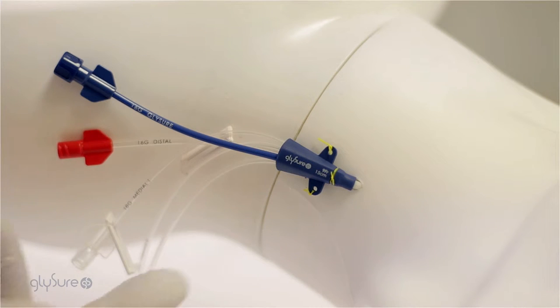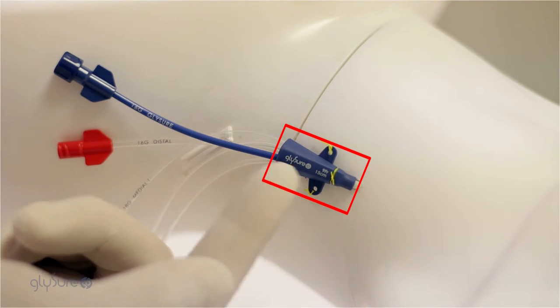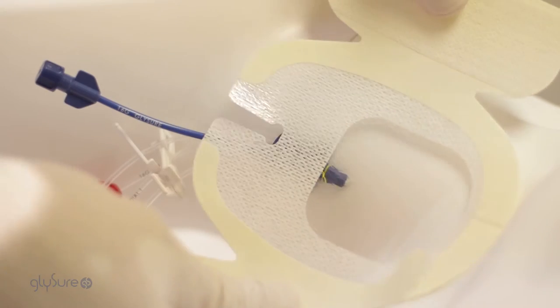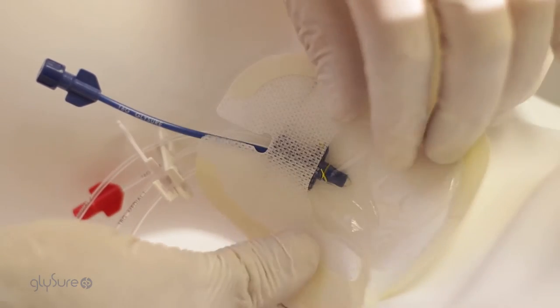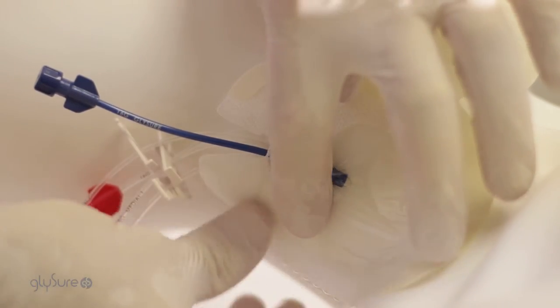Ensure the CVC is fully inserted up to the rubberised blue hub and the printed side is visible before suturing. Secure the CVC to the patient using a suitable dressing such as the 3M Tegaderm IV Advanced Dressing.